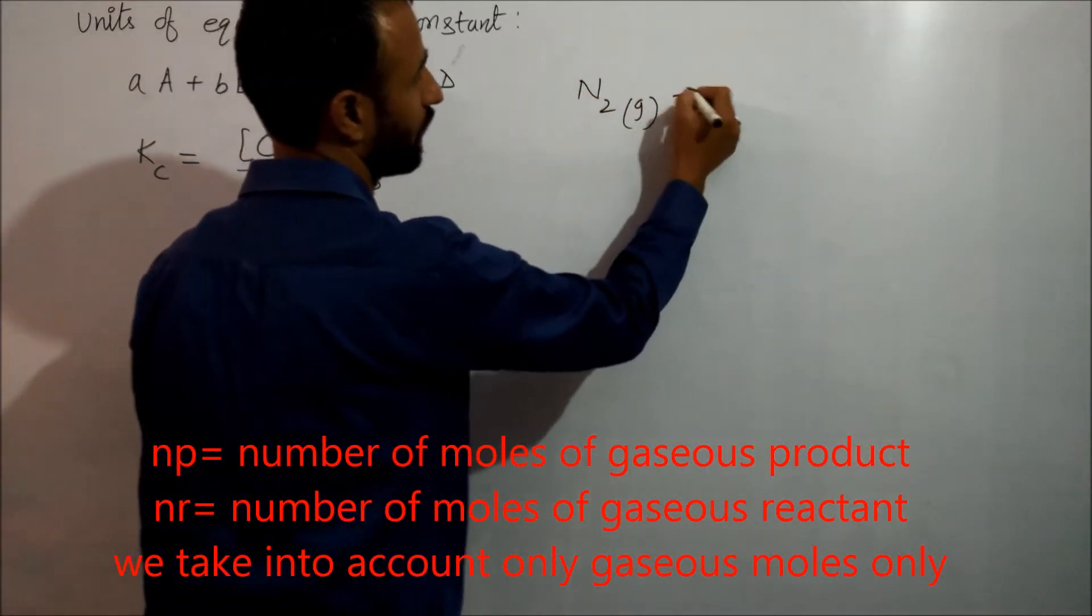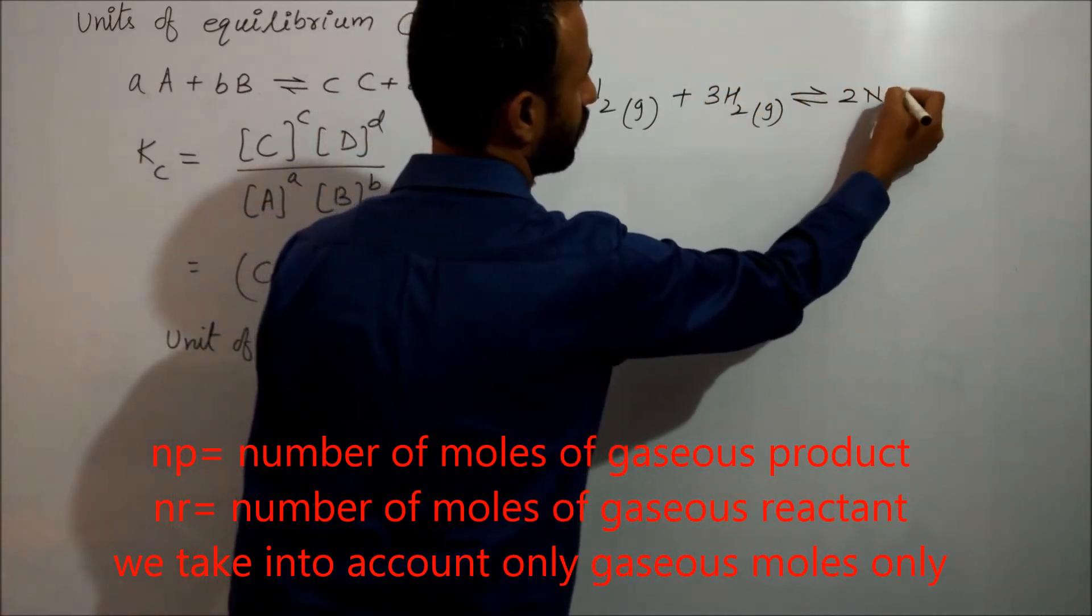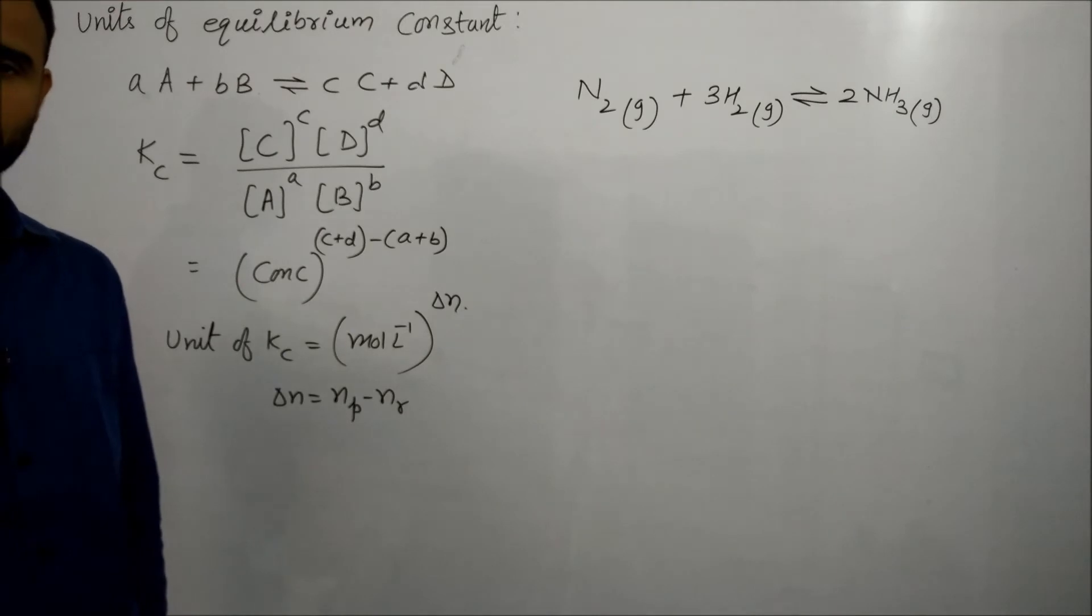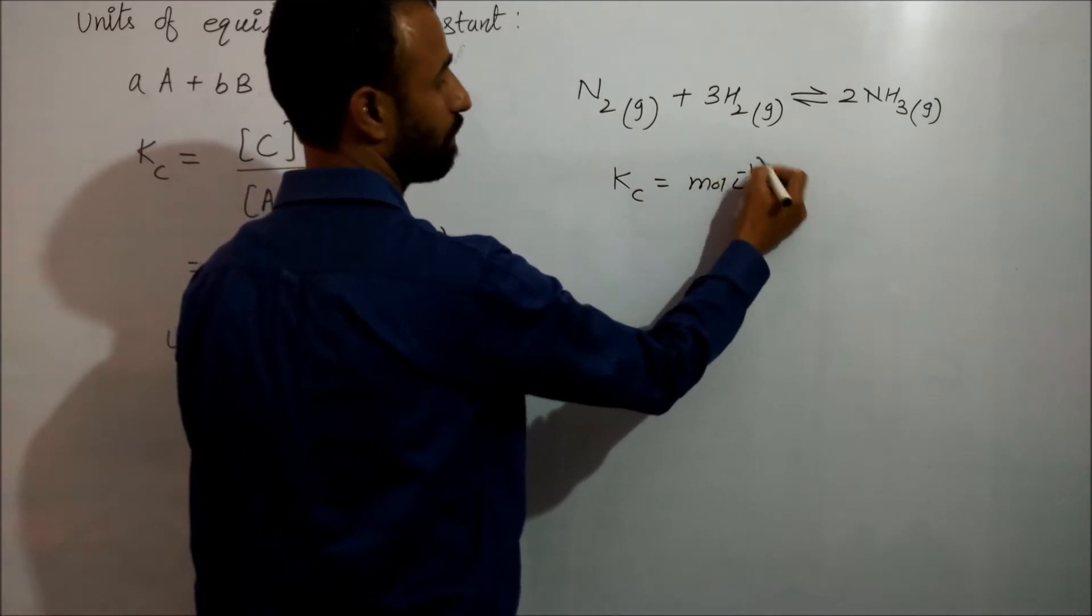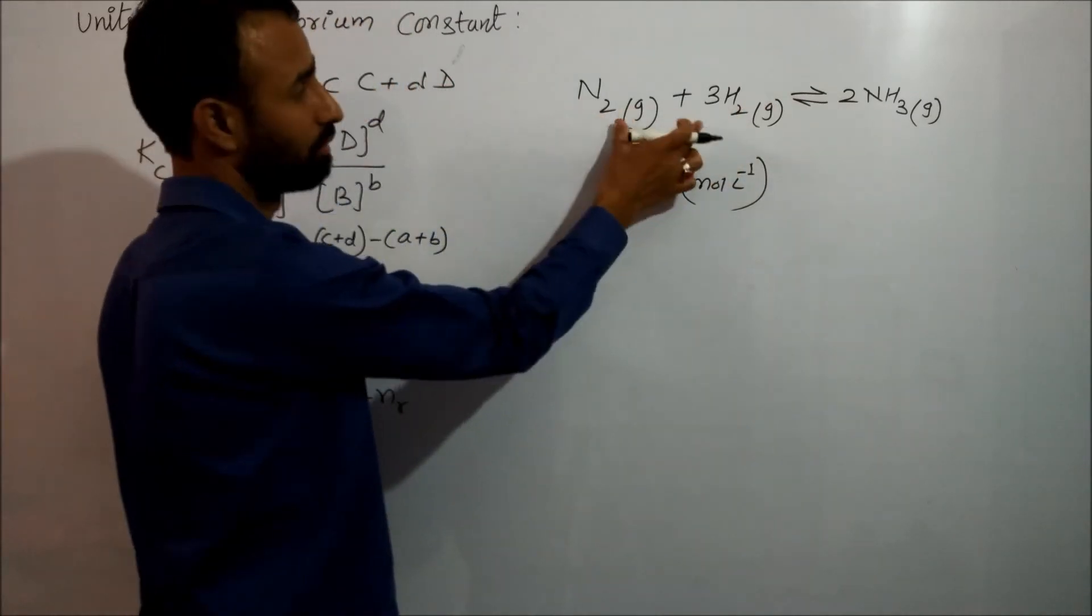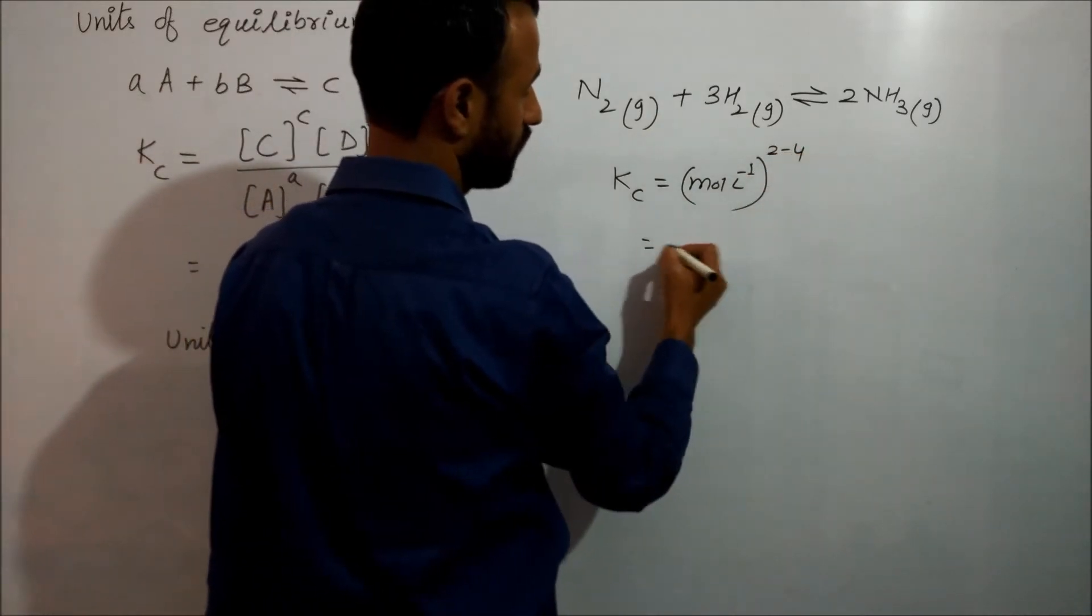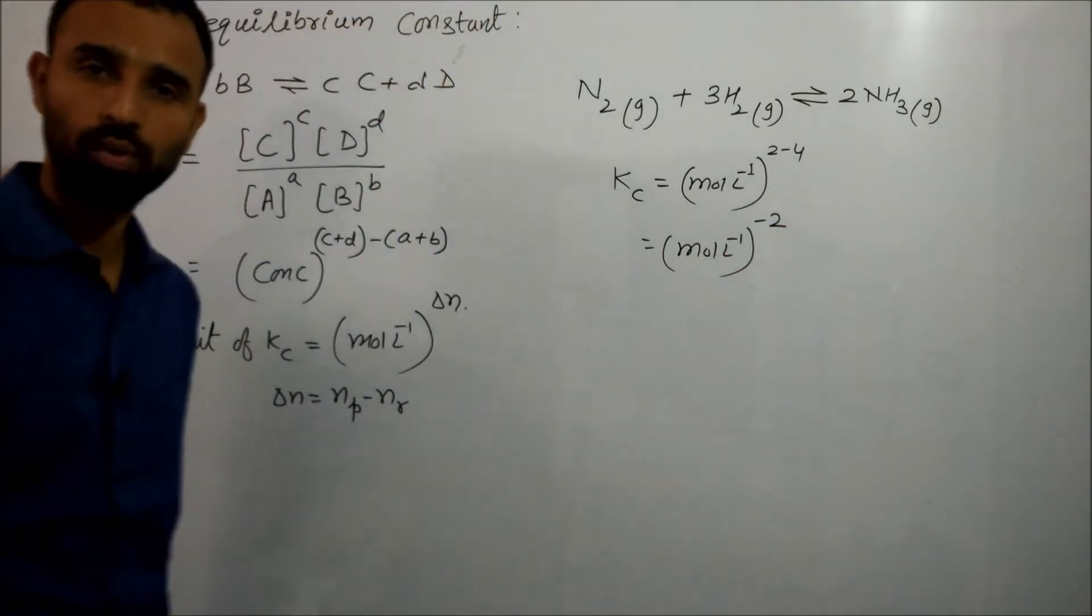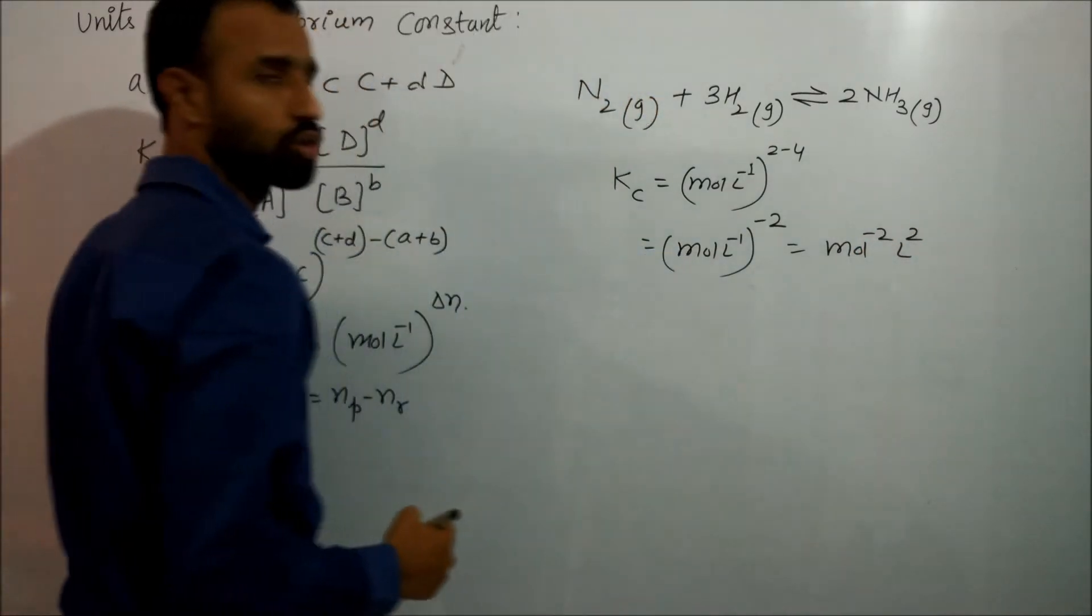For example, if we have a reaction N2 plus 3H2 gas to give 2NH3 gas, what is the units of Kc? So unit of Kc is mole per liter raised to power 2 minus sum of the reactants, 3 plus 1 is 4. 2 minus 4, that means mole per liter raised to power minus 2, which means liter squared per mole squared.